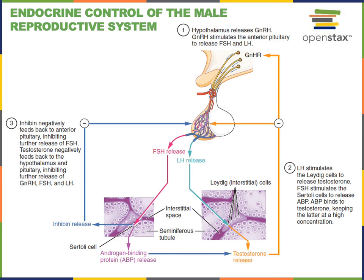Testosterone's negative feedback effect primarily regulates the control of luteinizing hormone release, and luteinizing hormone is the primary hormone regulating the production of testosterone.